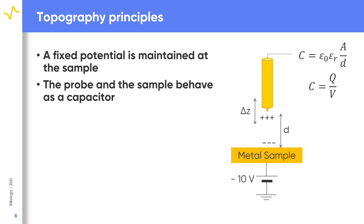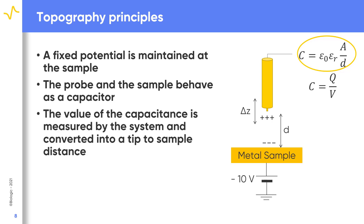As with the standard SKP measurements, a capacitor is formed by the probe and the sample. As a reminder, the capacitance is related to the probe-to-sample distance by the equations shown. Note that in this equation there are only two variables: d, the probe-to-sample distance, and C, the measured capacitance. By measuring the capacitance, therefore, it is possible to determine and map the local probe-to-sample distance.